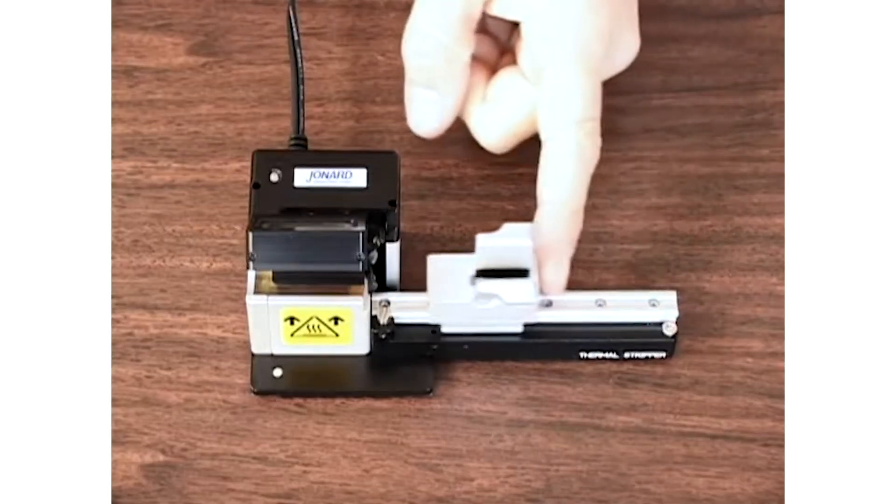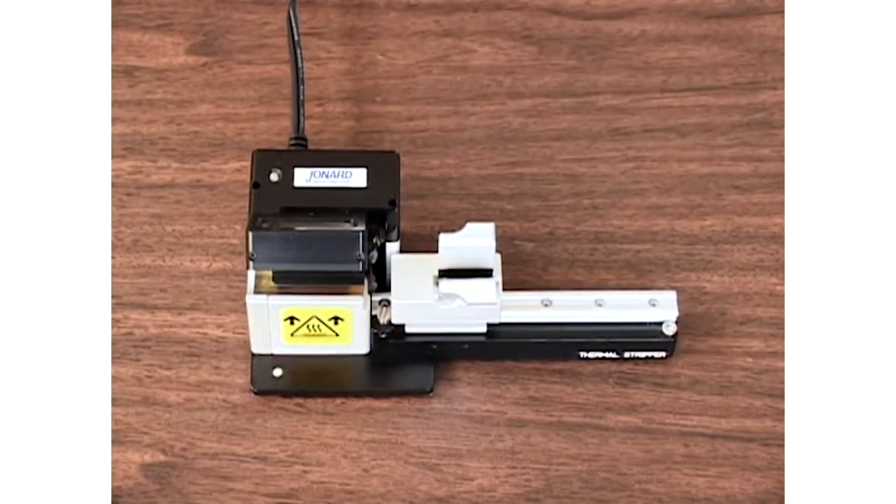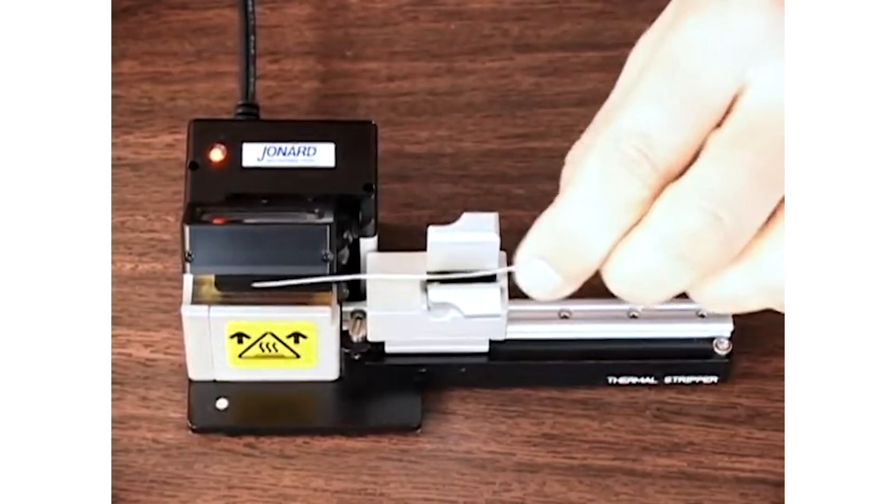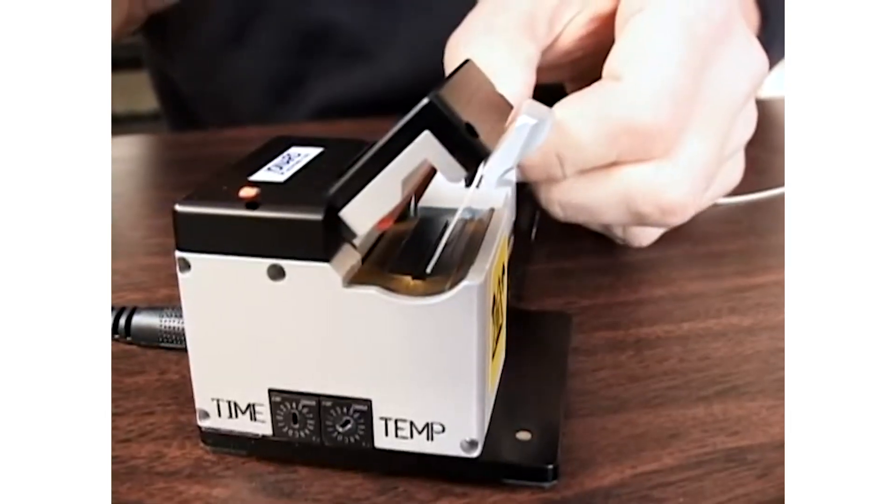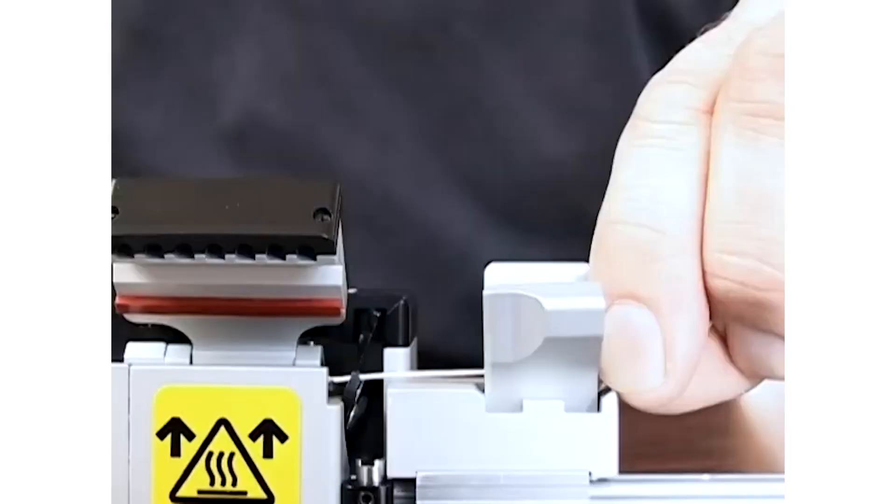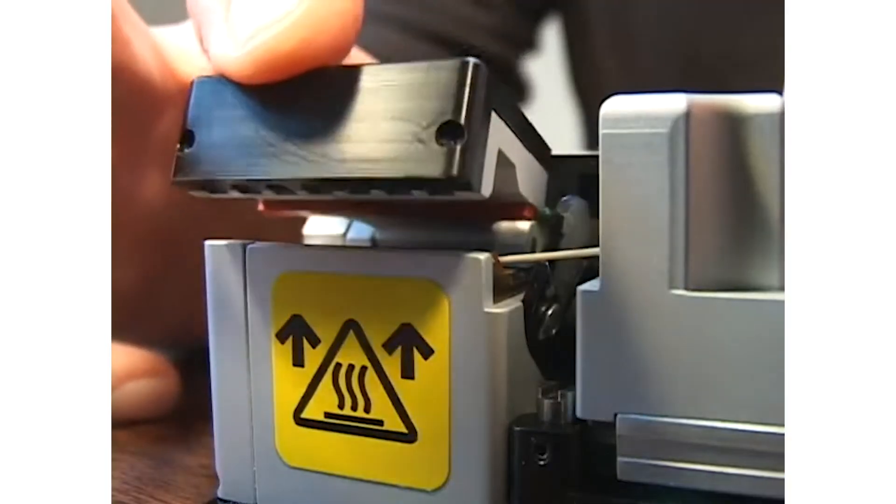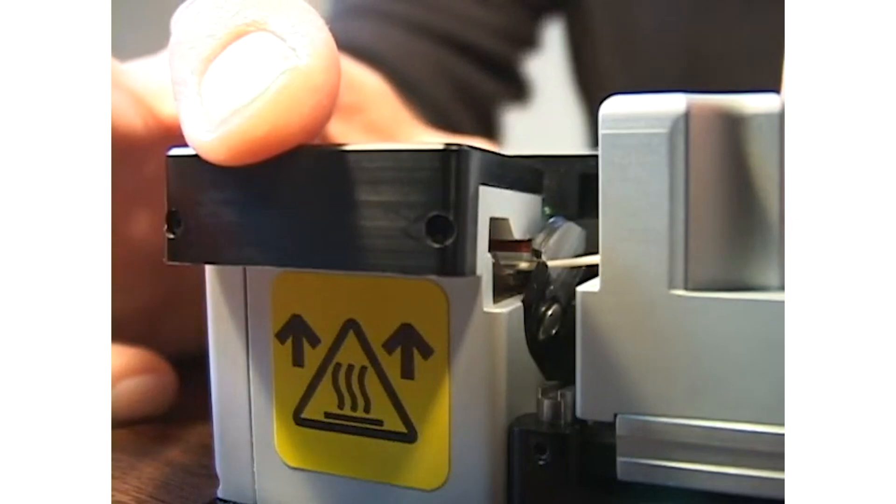To operate the thermal stripper, slide the platform all the way to the left. Place the fiber to be stripped in the fiber holder or universal clamp, such that the fiber extends to the far edge of the heater. Place the fiber holder on the platform and align the fiber so that it is on the heating element and between the V of the blades.